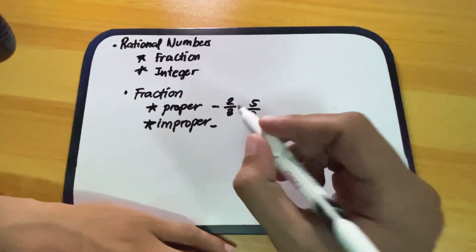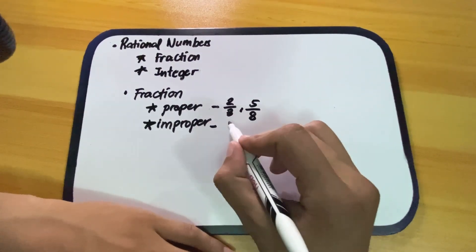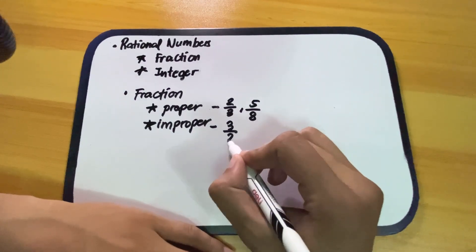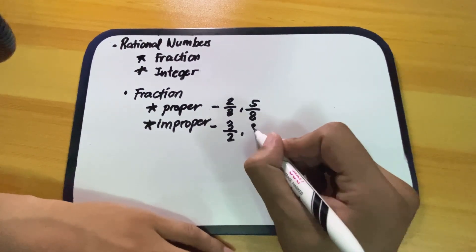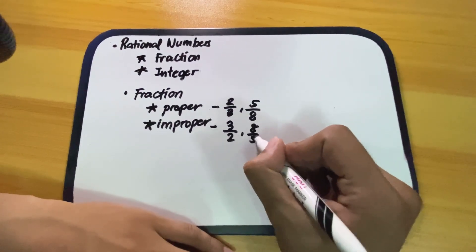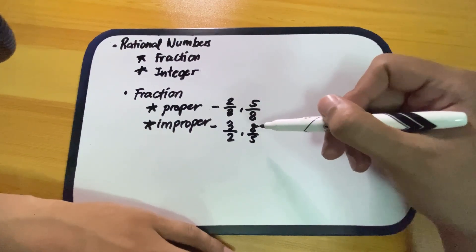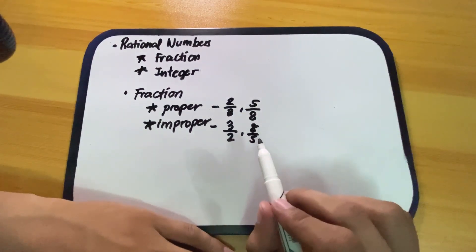Next is improper fractions. Improper is opposite to proper — for example, 3 halves or 8 over 5, where the numerator is larger than the denominator.